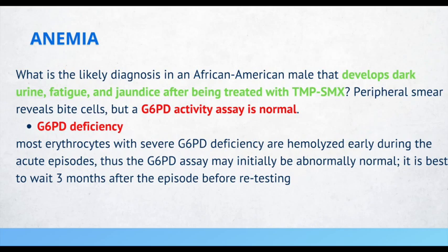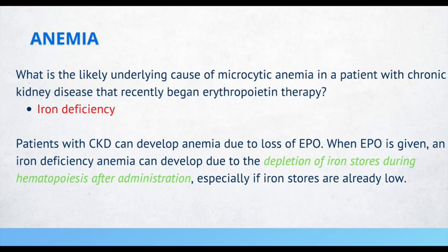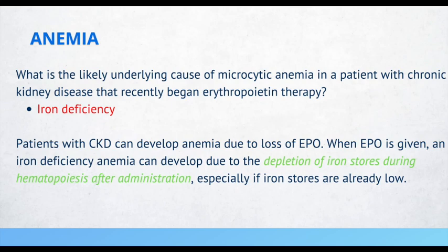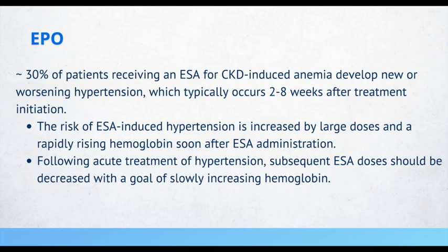What is the likely underlying cause of microcytic anemia in a patient with chronic kidney disease that recently began EPO therapy? Iron deficiency anemia. If a patient has chronic kidney disease and is taking an EPO agent, they can develop iron deficiency anemia because EPO leads to depletion of iron stores during hematopoiesis. Another important fact: patients taking an EPO agent for chronic kidney disease-induced anemia can develop worsening or new hypertension.